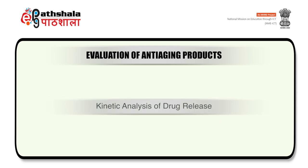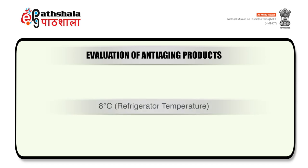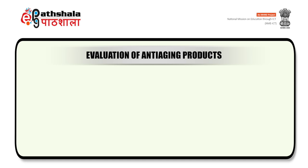The last evaluation parameter is stability testing. Stability of the formulation is checked by keeping at different temperatures: refrigerator temperature at 8 degrees Celsius, room temperature at 25 degrees Celsius, and oven temperature at 40 degrees Celsius. Changes occurring in anti-aging formulation are determined during one month of duration at these different temperatures.